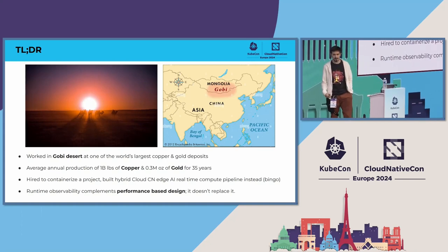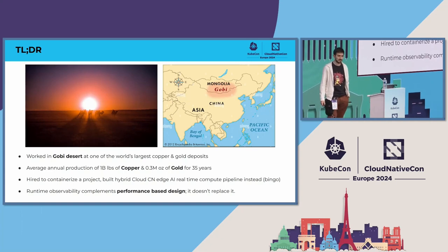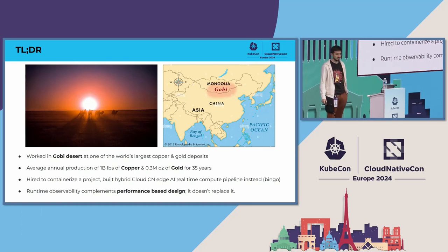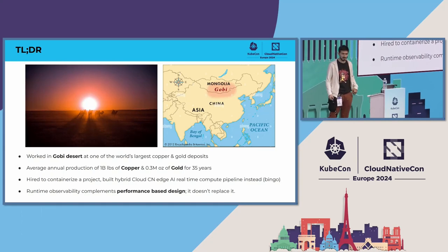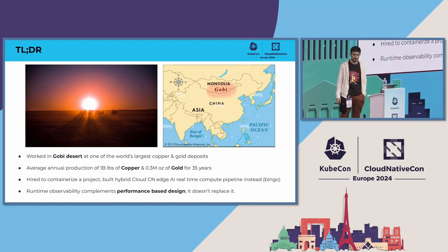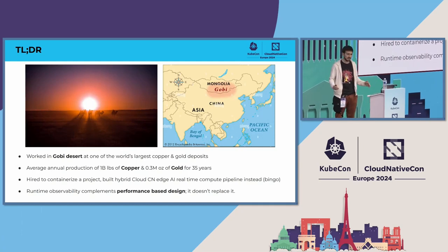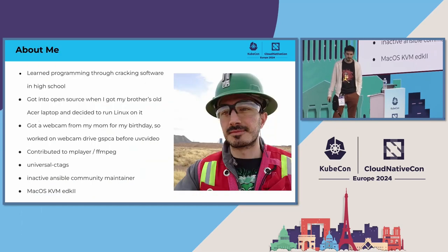One important takeaway I think some people in this community may have forgotten: runtime observability is absolutely amazing, but it doesn't prevent you from designing performance systems. Performance-based design is a term I copied from structural engineering — you define your performance criteria and then design your system based on that.